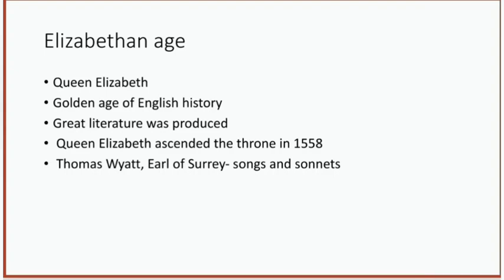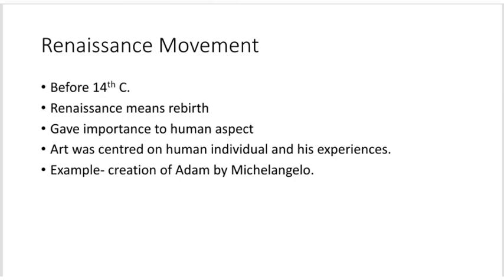Thomas Wyatt and the Earl of Surrey published their first edition of English poems, titled Songs and Sonnets, during this period. But before learning anything about this period, we need to look at the Renaissance movement. The Renaissance movement began in the late 14th century when people began to take interest in the classical literature of early times, especially in the Greek and Roman cultures. The word Renaissance has its roots in the French language and it means rebirth — rebirth of classical literature and learning.